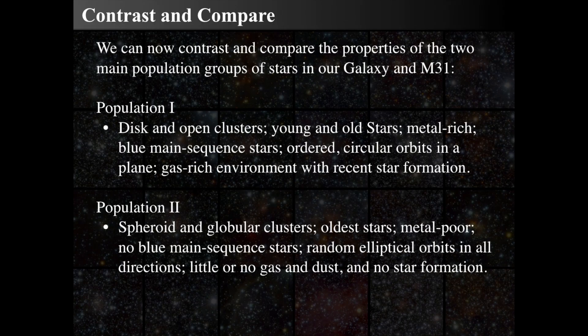Contrasting the two populations: Population 1 stars are in the disk and open clusters, are young and old, metal-rich, may include blue main sequence stars, and orbit in ordered circular paths in the galactic plane, in a gas-rich environment with ongoing star formation. Population 2 stars are in the spheroid, halo, and globular clusters; they are the oldest stars, extraordinarily metal-poor, with no blue main sequence stars — mostly G, K, and M-type stars. They have random elliptical orbits in all directions and are never coincident with star formation.